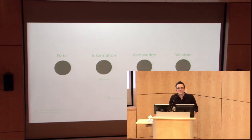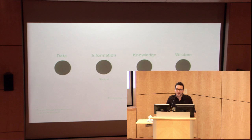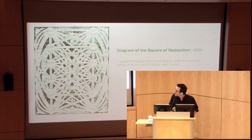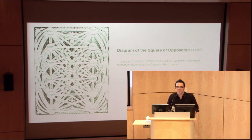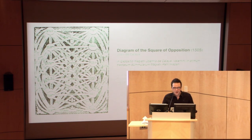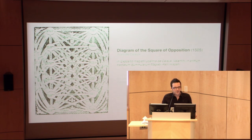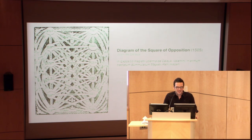Many of you might say that information visualization is not something new — we have been doing it for ages as human beings. Some of these examples are remarkable. This one is the diagram of the square of opposition from 1505, done by Spanish scholar Joan de Salaya, mapping philosophical concepts and contradictions. A beautiful, remarkable example of visual complexity in the Middle Ages.